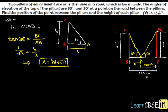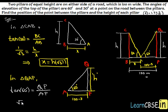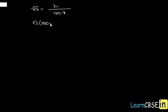To get the value of H, we consider triangle QAP. Here QP is the perpendicular and AP is the base. We apply tan of 60 degrees equals perpendicular over base, which is QP over AP. Substituting, tan 60 degrees is root 3, QP is H meters, and AP is 100 minus X meters. By cross multiplication, we get root 3 times (100 minus X) equal to H.